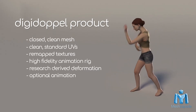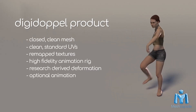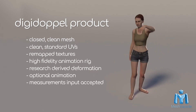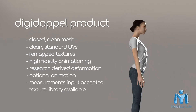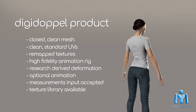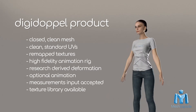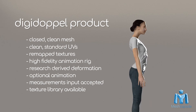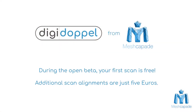These features are even available without an input scan. All you need is a short list of body measurements. Digidopple also provides a library of tailored character texture maps, if you lack your own or require variety. Visit digidopple.com to join our open beta.